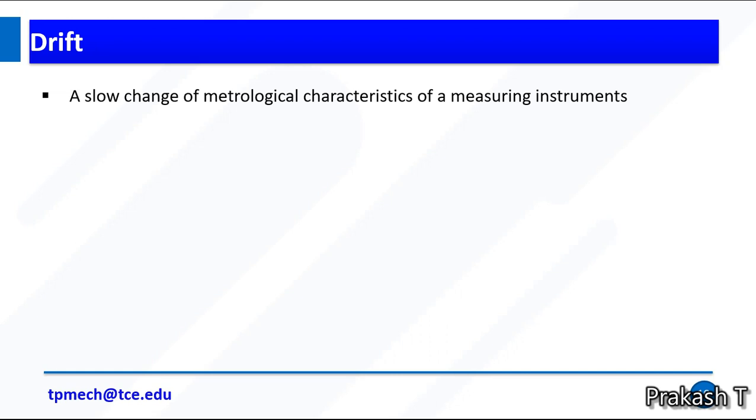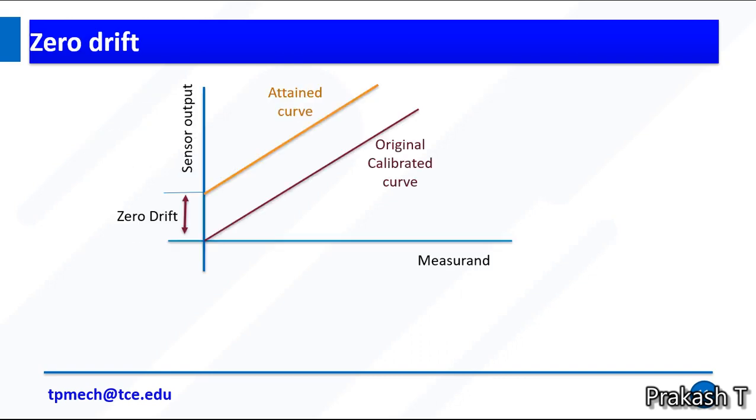Drift: a slow change of metrological characteristics of measuring instruments is known as drift. We have three types of drift: zero, span, and combined drift.